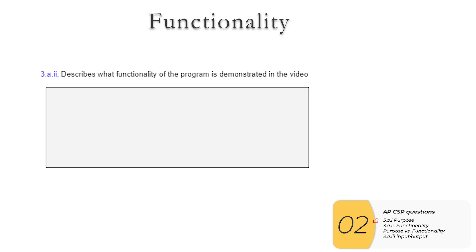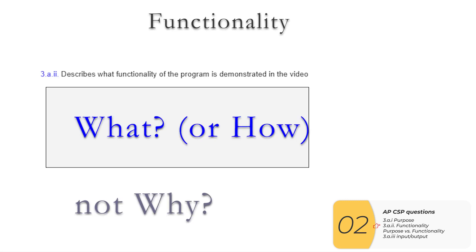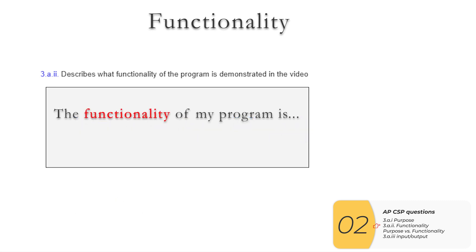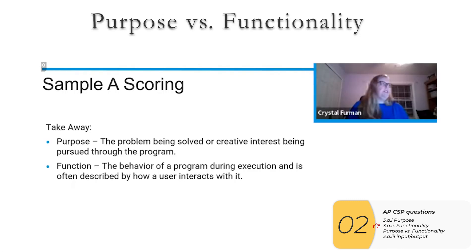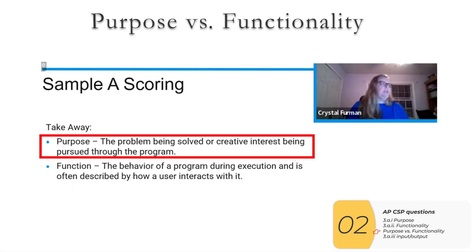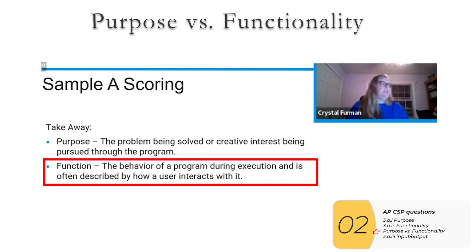The next question asks you to describe the functionality of the program — that is not why you're making the program, but what or how it is working. I recommend that you start every answer with 'The functionality of my program is,' which makes things easier for you and the grader. Half the people missed this question because they confused purpose and functionality. The purpose is the problem being solved, the creative interest being pursued, or why. The functionality is the behavior of the program — how or what.